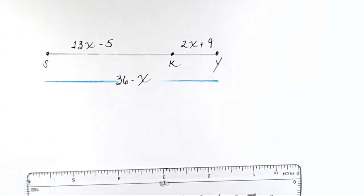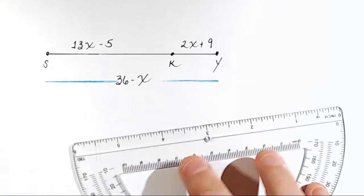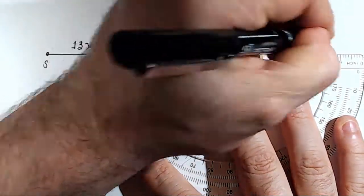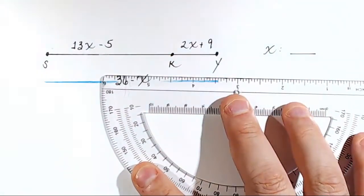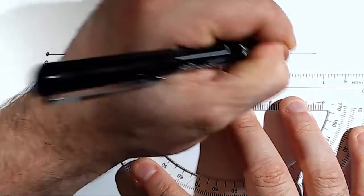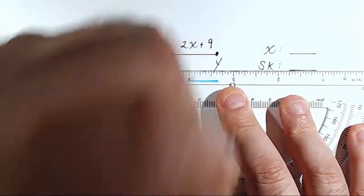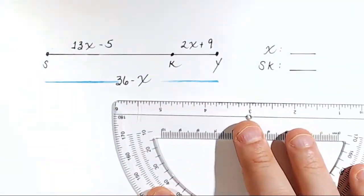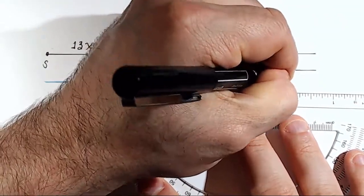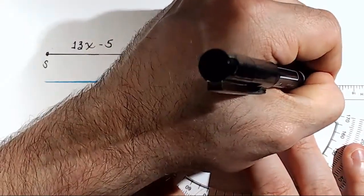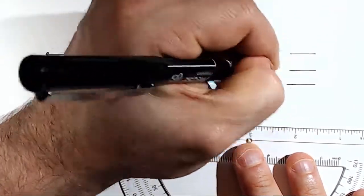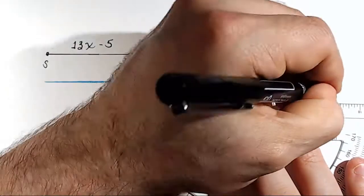And what we're asked to do is solve it all. We're asked to find everything. First, we're asked to find X. They also want to know what distance SK is. Now these people are demanding. They also want to know what distance KY is, and then they finally want to know what distance SY is. So this is our work - we've got to find all four of these.